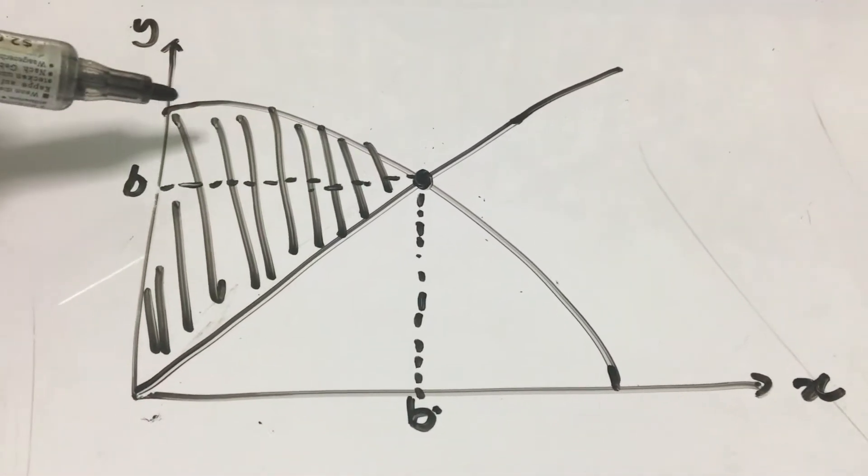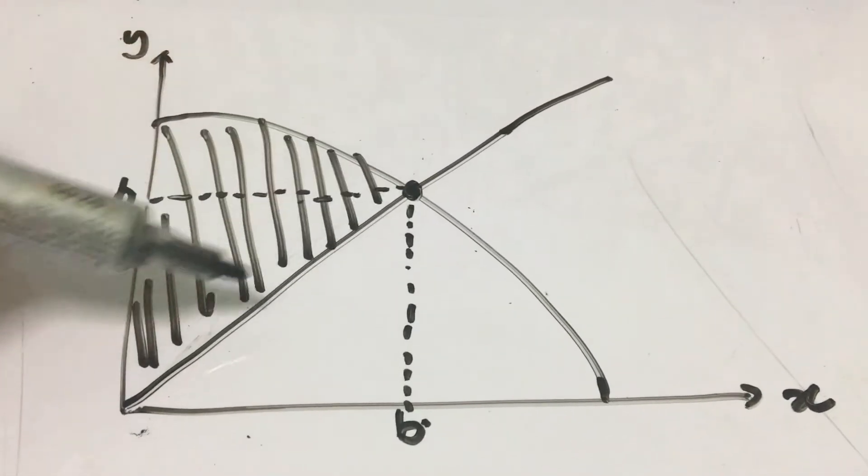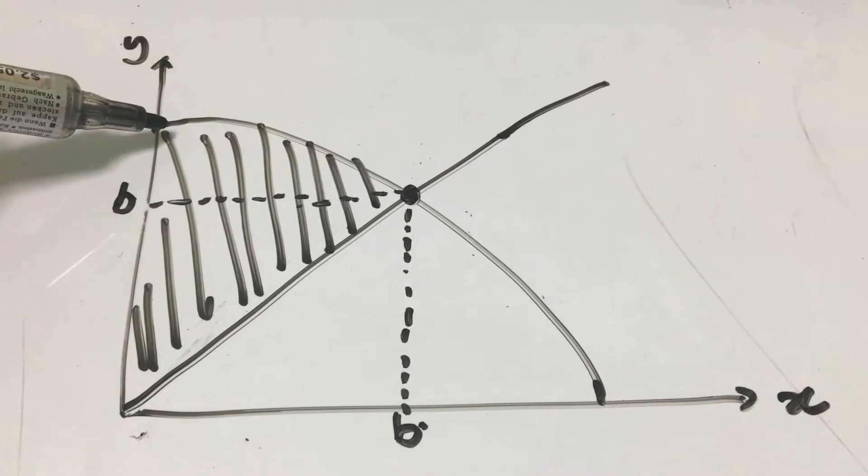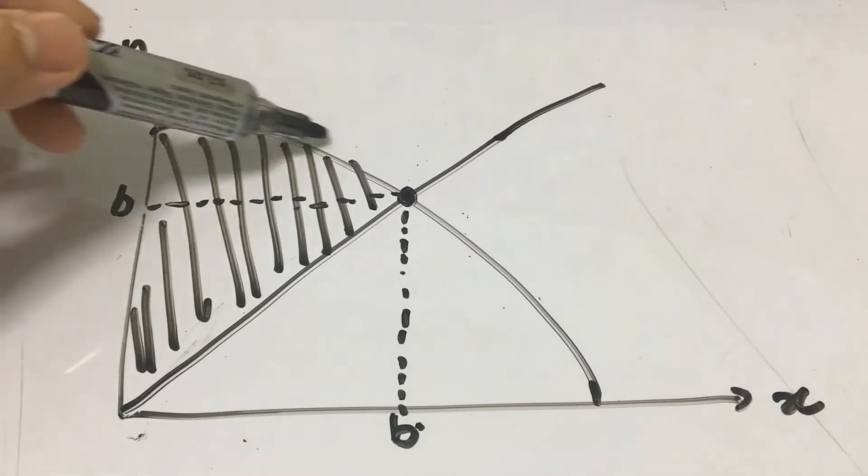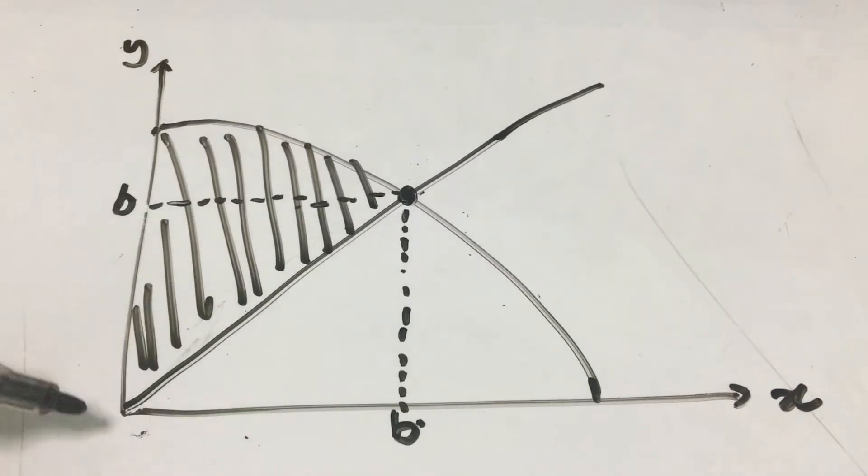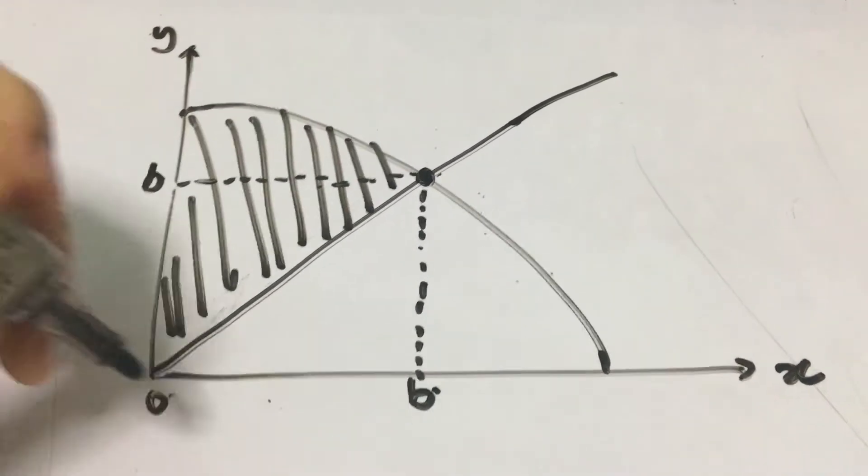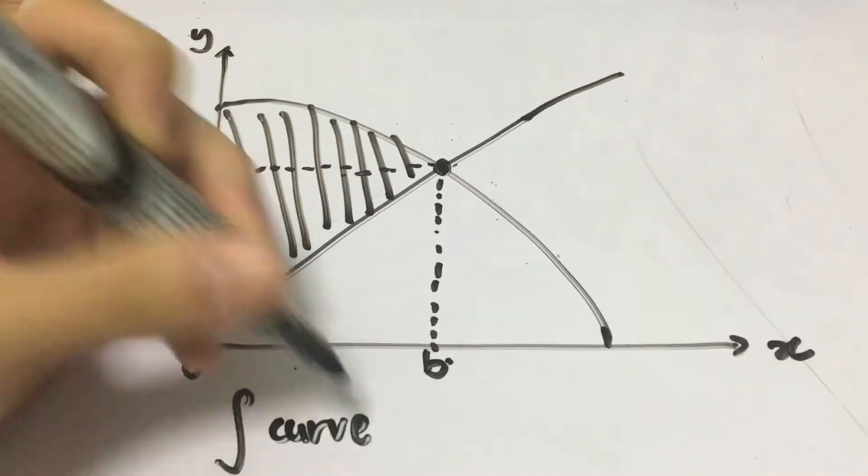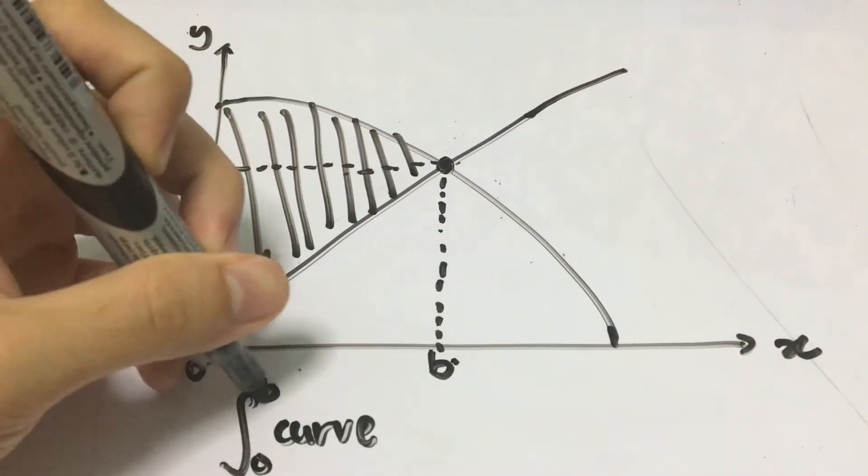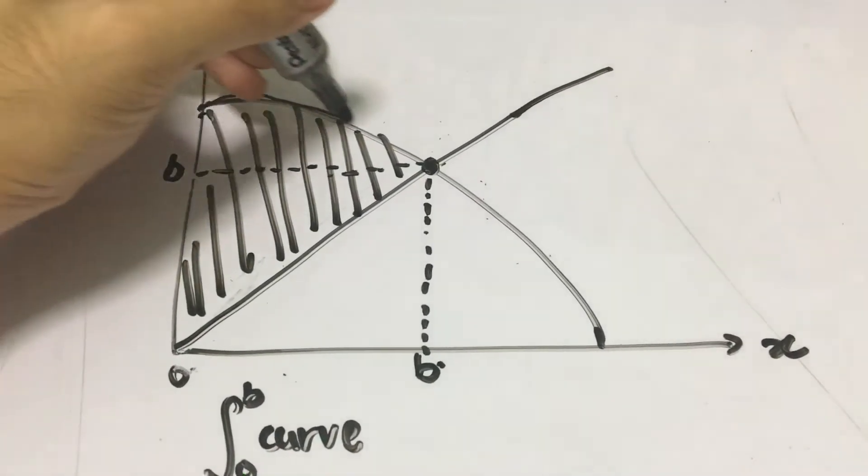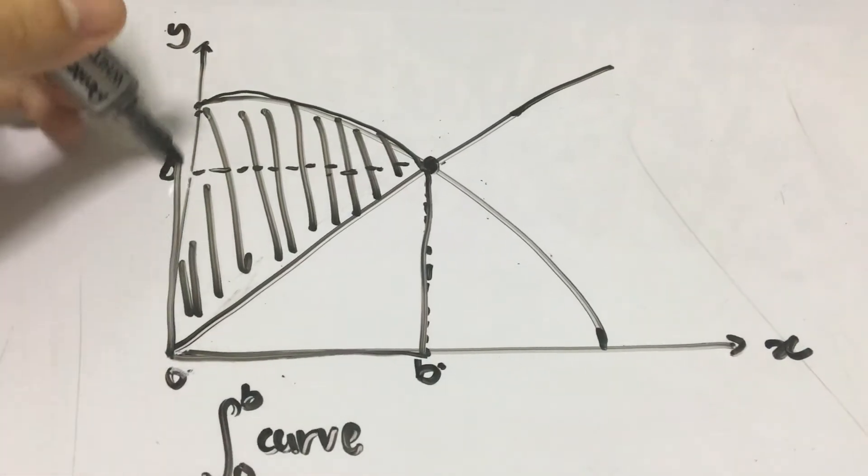To calculate the area under the curve or the shaded region, you take the integration of the curve from 0 to b. That will give you this whole segment down here. This is the first part.